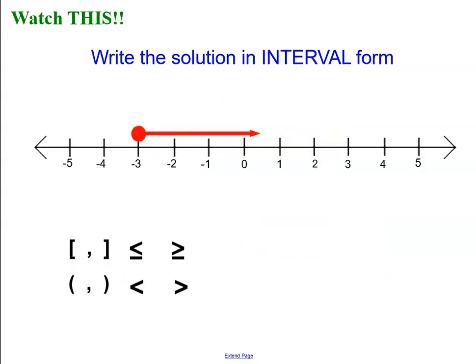In this one, my lowest value is a negative 3 with a closed circle. So I can be equal to it. My highest value is an arrow, so that's infinity. Infinity always gets a parentheses.